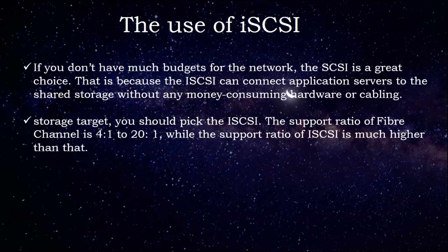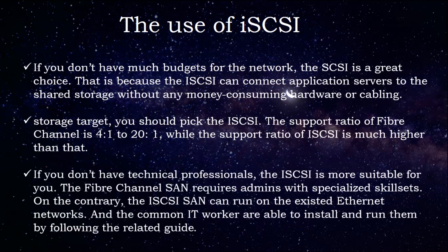The support ratio of Fibre Channel is 4:1 to 20:1, while the support ratio of iSCSI is much higher than that. If you don't have technical professionals, iSCSI is more suitable for you. Fibre Channel SAN requires admins with specialized skill sets; on the contrary, iSCSI can run on existing Ethernet networks and common IT workers are able to install and run it by following a related guide.